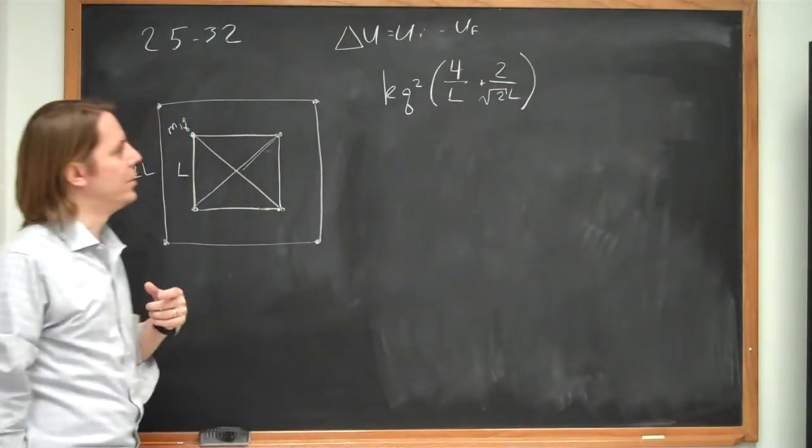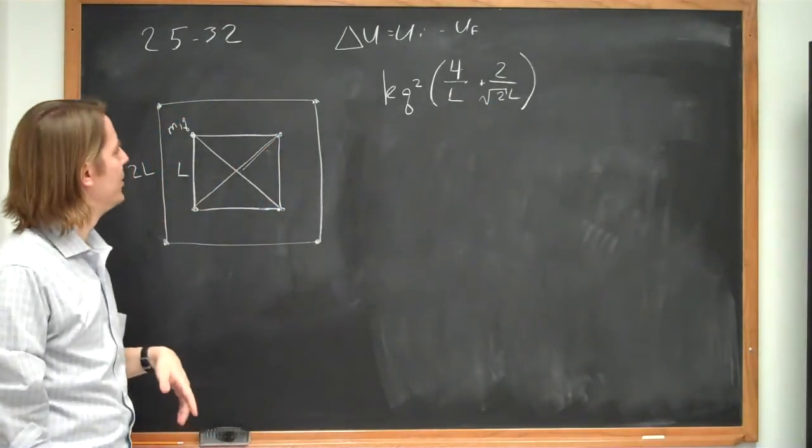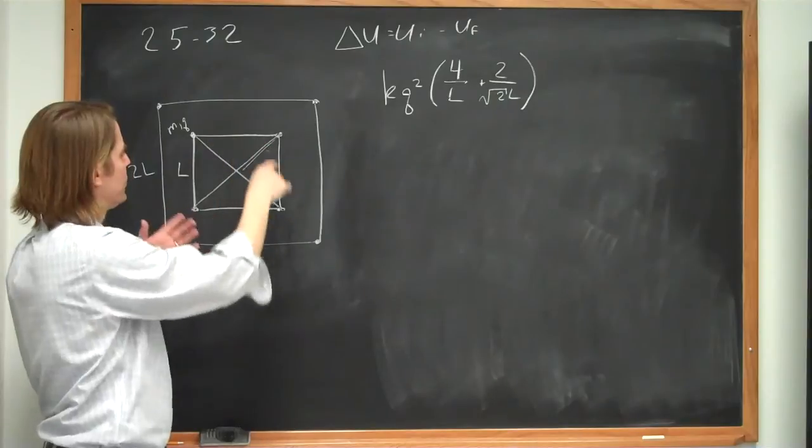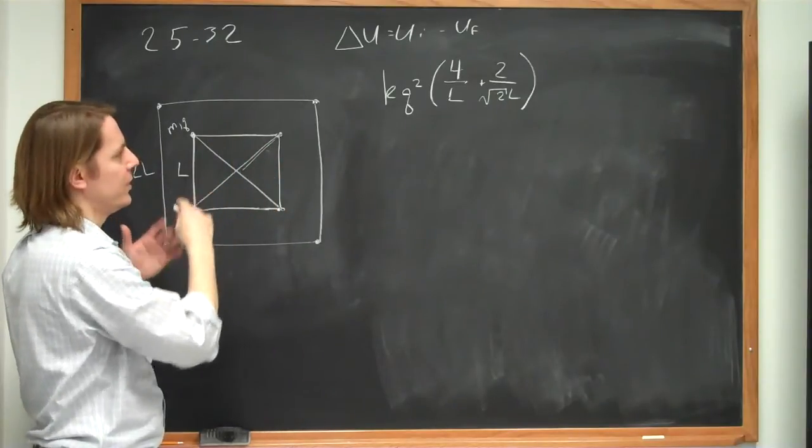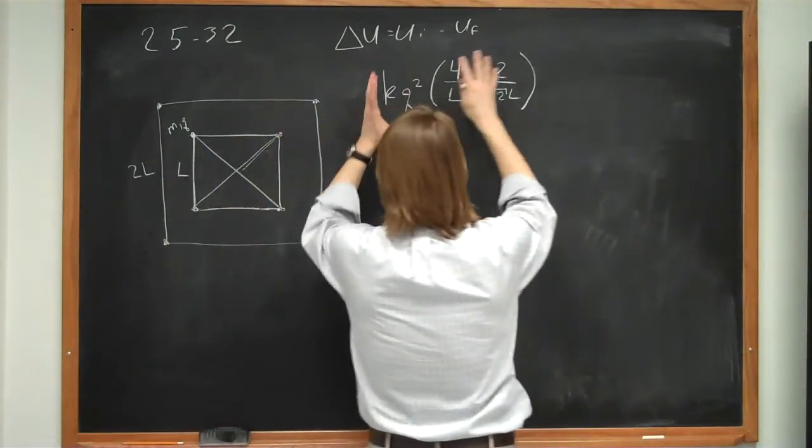So I went ahead and did a shortcut and just wrote that in one term. This is really all six of your elements. You can make sure it's six because there's four charges, so 3 plus 2 plus 1 is 6. So you can check it. And then, this is the initial energy.